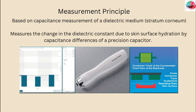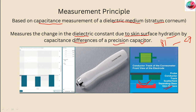Regarding the measurement principle: measurement is based on the capacitance measurement of a dielectric medium — here, the stratum corneum. With increasing hydration, its dielectric properties change. The measurement is based on the fact that water has a higher electrical constant of 81, compared to most other substances which have values less than 7. The Corneometer measures the change in the electrical constant due to skin surface hydration by capacitance reference of a precision capacitor.